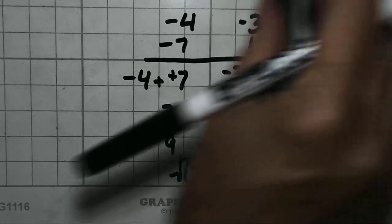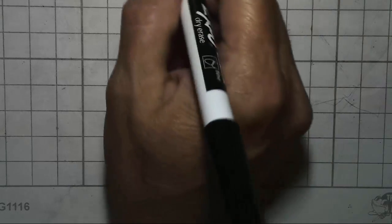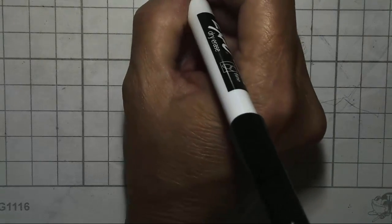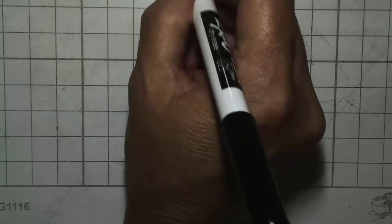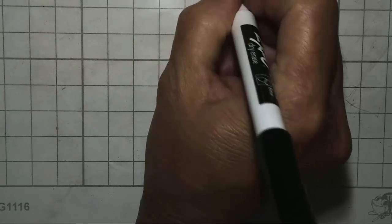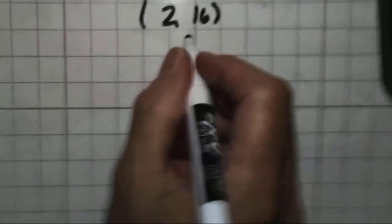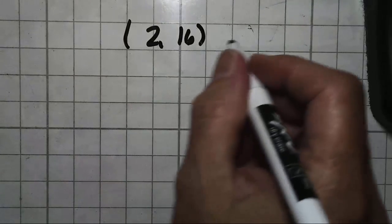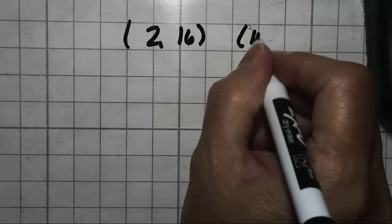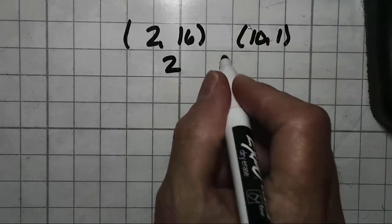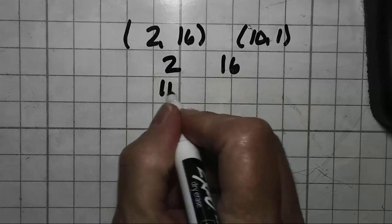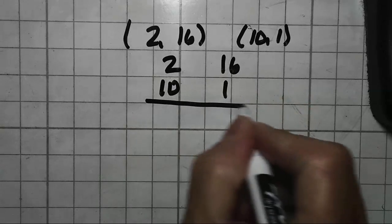Let's do another one. Let's do 2, 16 and 10, 1. We're going to set them up just like we did before. 2, 16 and 10, 1. Draw our line.